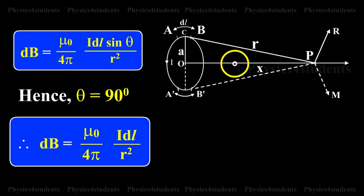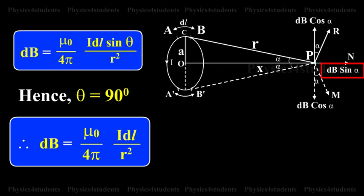Let the angle between the axis of the coil and the line joining the element DL and the point P be alpha. DB is resolved into two components: DB sin alpha along OP and DB cos alpha perpendicular to OP. DB cos alpha due to two opposite elements cancel each other whereas DB sin alpha components get added up.